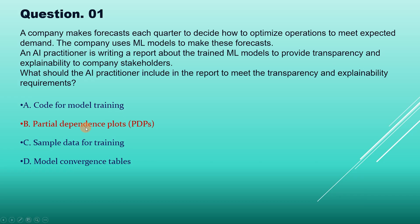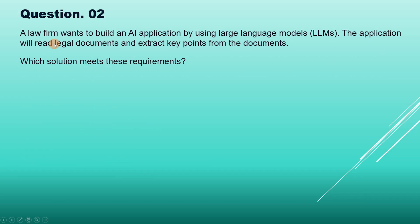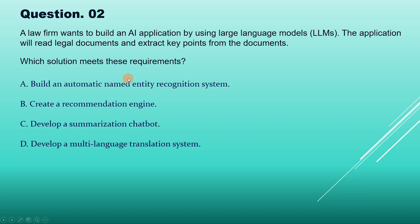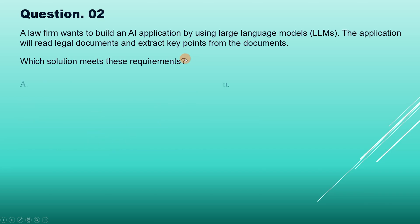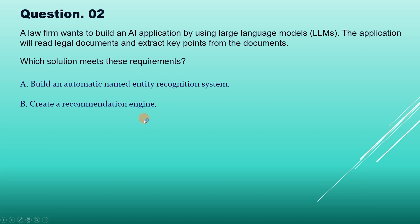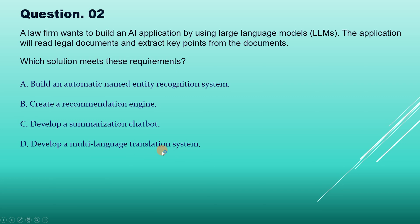Question 2: A law firm wants to build an AI application using large language models. The application will read legal documents and extract key points. Which solution meets these requirements? Options: A) Build an automatic named entity recognition system, B) Create a recommendation engine, C) Develop a summarization chatbot, D) Develop a multi-language translation system.